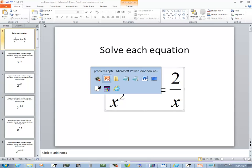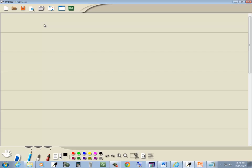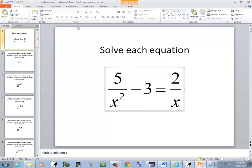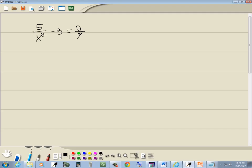Let's solve this rational equation. We've got 5 over x squared minus 3 is equal to 2 over x. Now our steps for solving a rational equation. Our first step is to factor all of our denominators. Well, there's nothing to factor here.